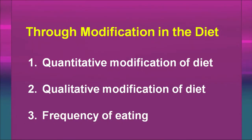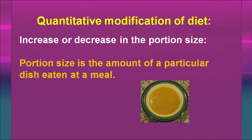Let us first learn about modification in the diet, which can be done in three ways: quantitative modification of the diet, qualitative modification of the diet, and frequency of eating. First, we will talk about the quantitative method — you increase or decrease the portion size. The portion size is whatever amount you are eating in a particular meal.